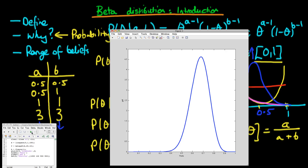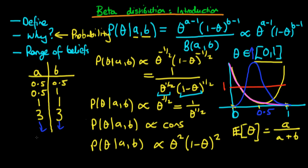The beta distribution is a way of specifying a range of different beliefs about a probability, and by changing a and b we can capture essentially most situations we'd like to cover in terms of prior beliefs. There is one caveat: we can't specify bimodal beliefs about values of theta — for example, a distribution peaked at both a quarter and three quarters simultaneously. For such cases we'd need a different distribution or a numerical approach. However, the beta distribution has the nice property that it is conjugate to binomial and Bernoulli random variables, meaning the posterior distribution in those circumstances is also a beta distribution.